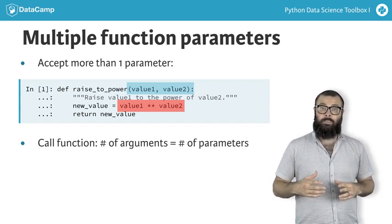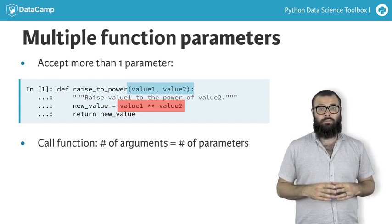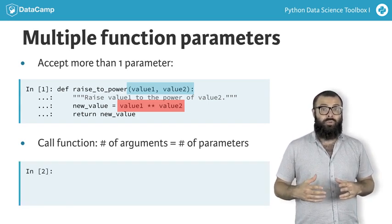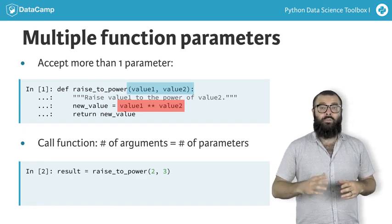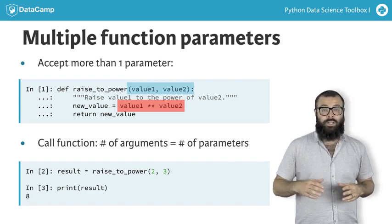The order in which the arguments are passed correspond to the order of parameters in the function header. This means that when we call raise to power two, three, when the function is executed, two would be assigned to value one and three to value two.